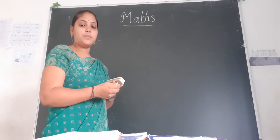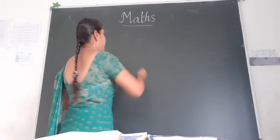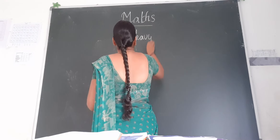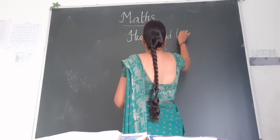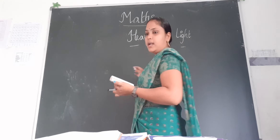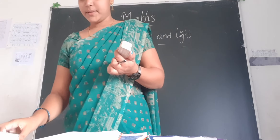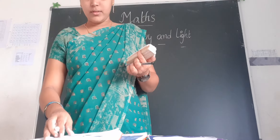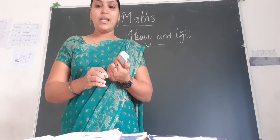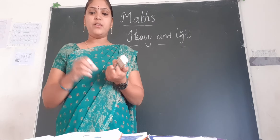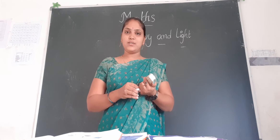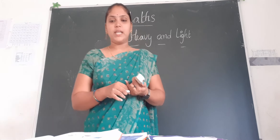So in this chapter we are going to learn about heavy and light — heavier and lighter. Now open to page number 80 children. We are given one apple and one feather. In these two, which one is heavier? Apple is the heavier object.